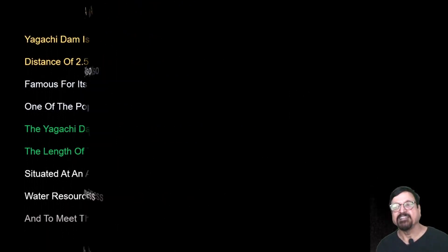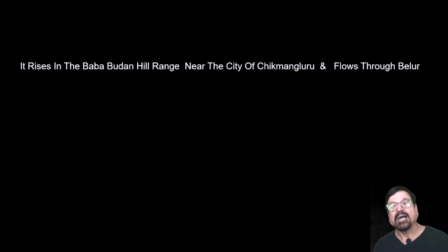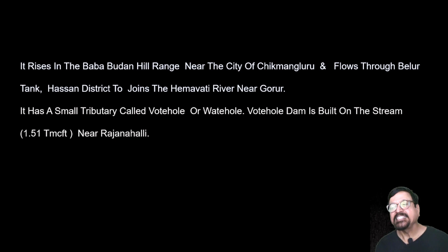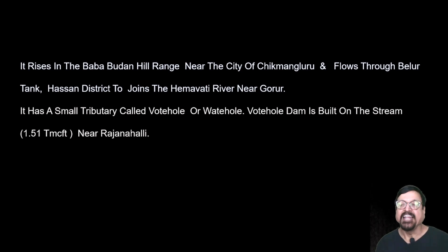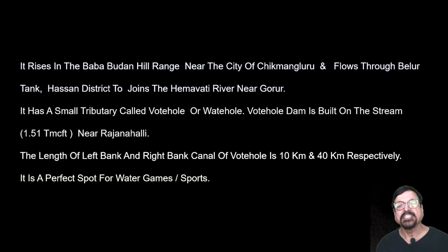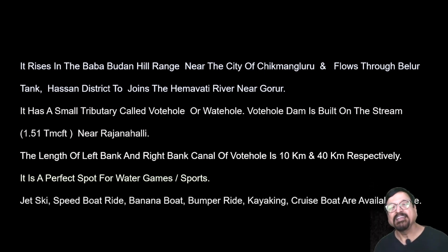This dam mainly serves the Chikamangaluru and Hassan districts. The river rises in the Bababudan Hills in Chikamangaluru and flows through the Belur tank in Hassan district to join the Hemavati River near Gorur. It has a small tributary called Vate Hole. The Vate Hole Dam is built on this stream near the Rajana Hills. There are two canals — one on the left bank and one on the right — of around 10 kilometers and 40 kilometers respectively.